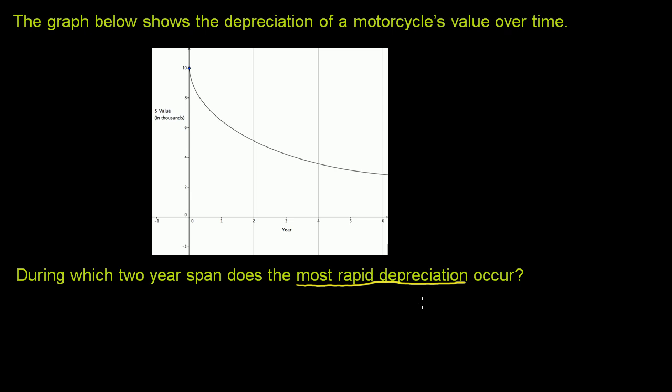So depreciation just means loss in value. And this shows the motorcycle's value. You can just eyeball this here. Let's just look at what this chart's saying. This is saying, right when the motorcycle is brand new, when it's zero years old,